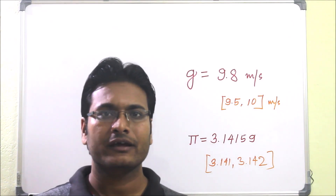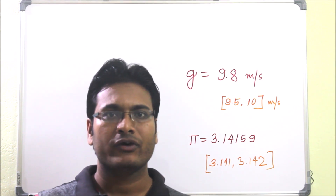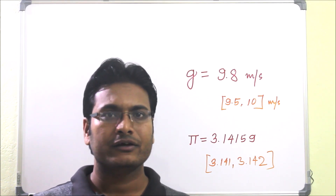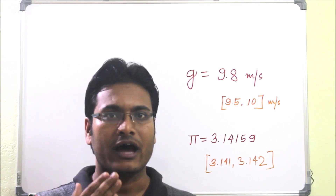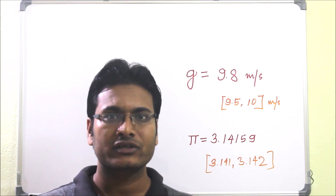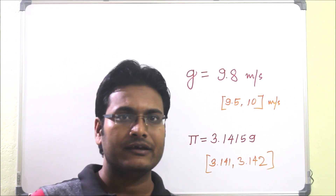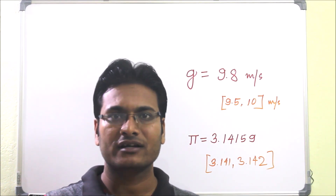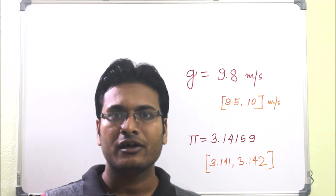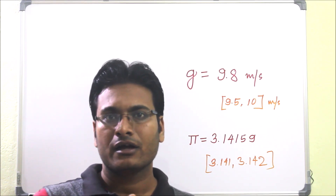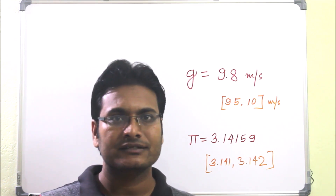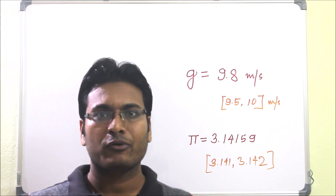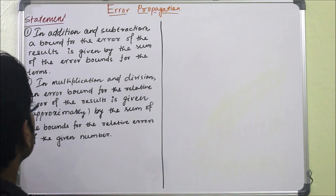In this lecture we are going to see another important topic in numerical analysis: error. Whenever we do some calculation, whenever we deal with digits, there will be either chopping or roundup error. If an error occurs at the beginning and then we apply a numerical method, the solution depends on the propagation of error — that is, how error depends on mathematical operations. This is called error propagation, and based on that there is the error propagation theorem.